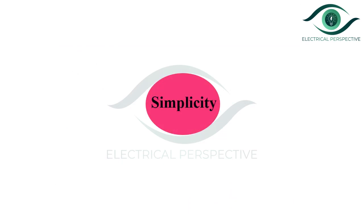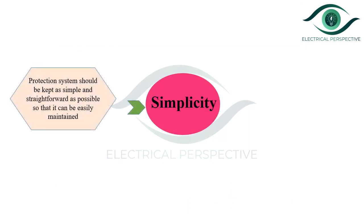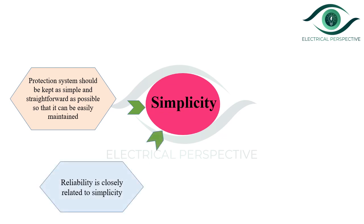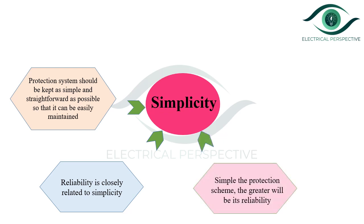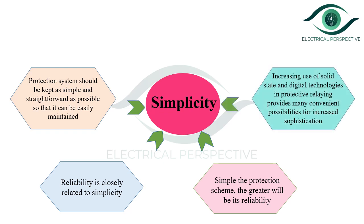The next essential quality is simplicity. The protection system should be kept as simple and straightforward as possible so that it can be easily maintained. Reliability is closely related to simplicity — the simpler the protection scheme, the greater its reliability. The increasing use of solid-state and digital technologies in protective relays provides many convenient possibilities for increased sophistication.